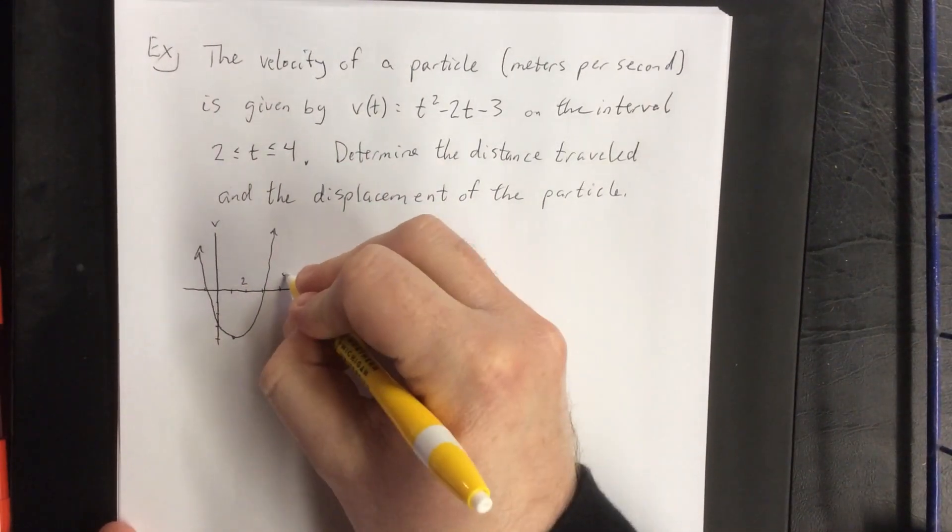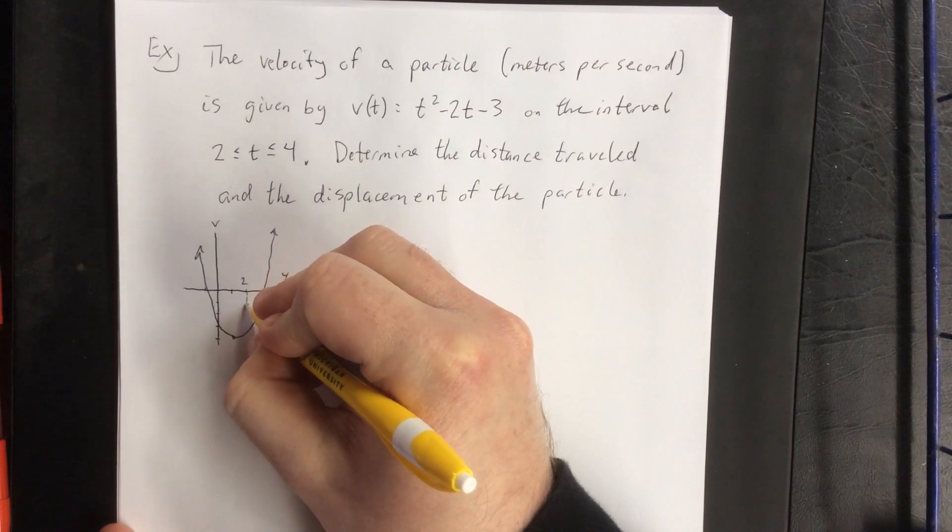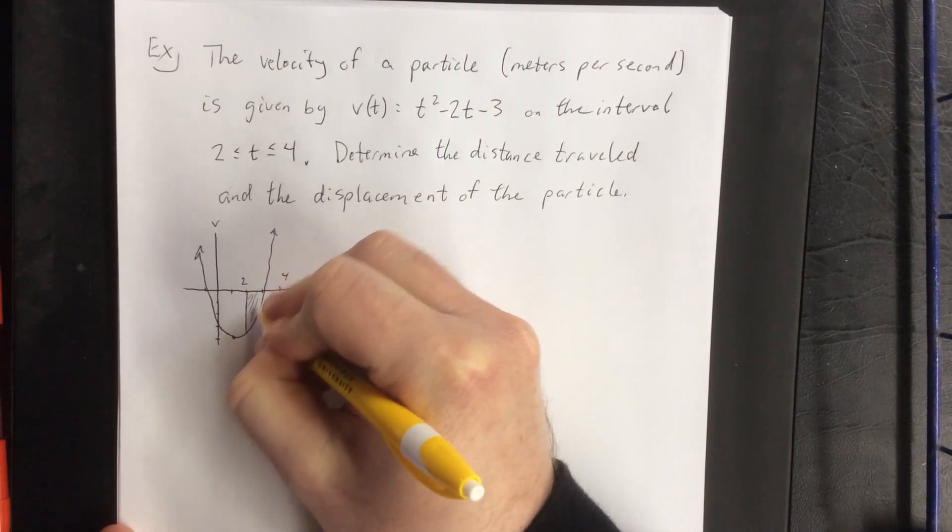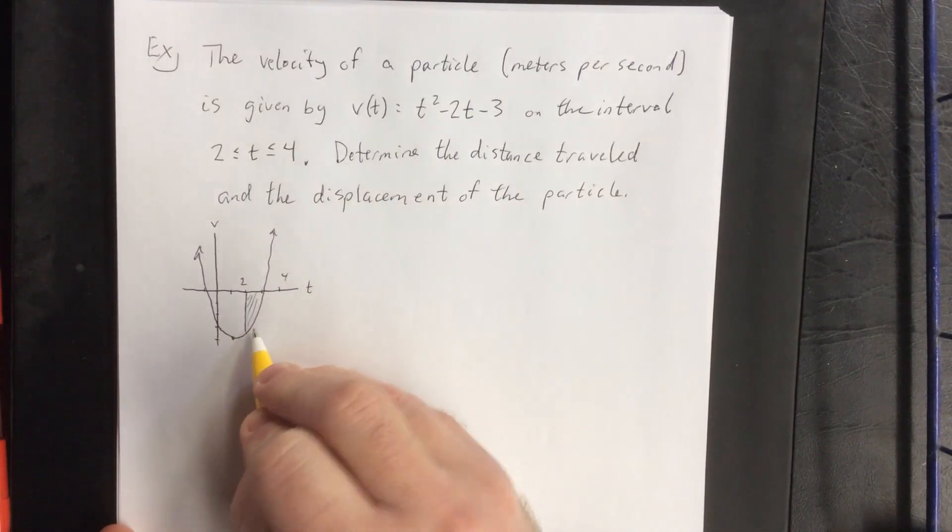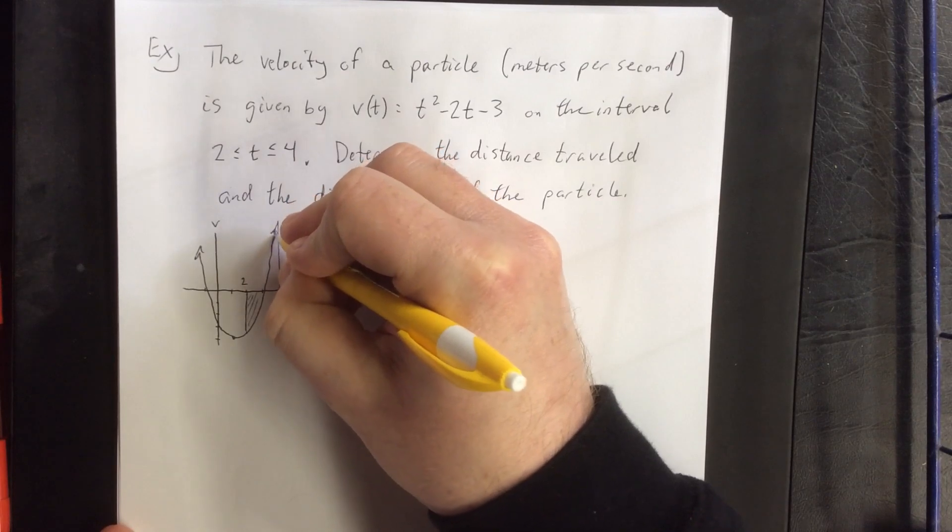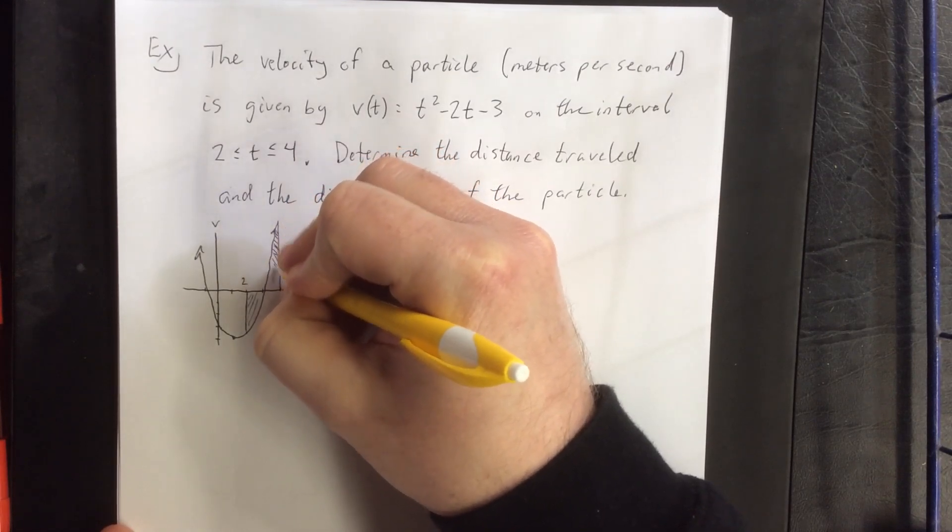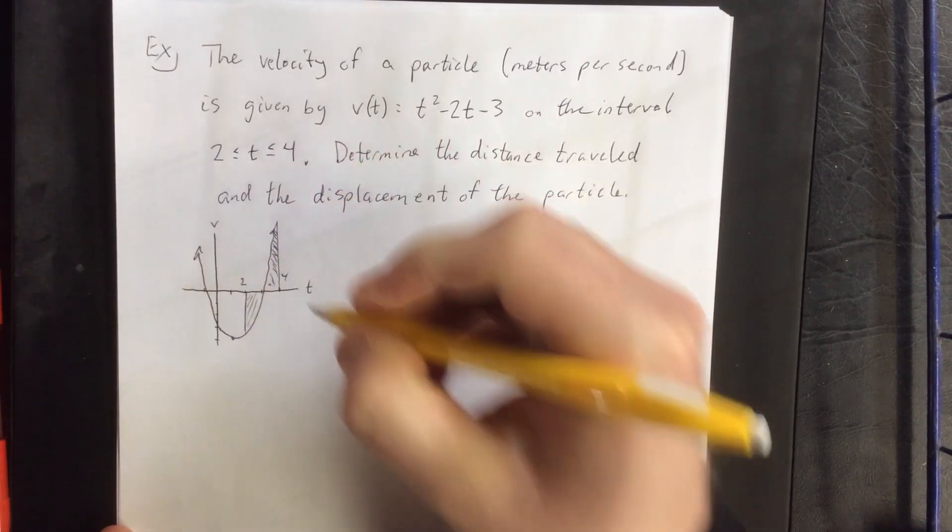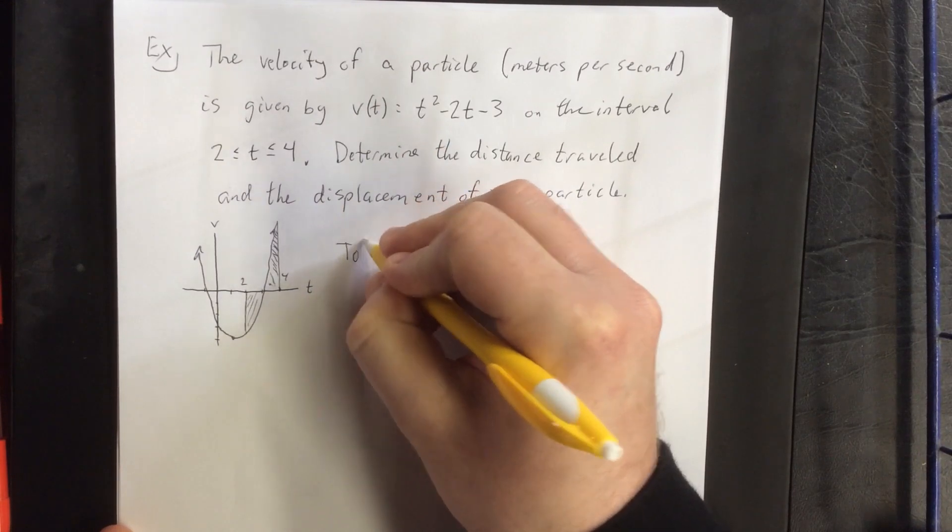Now from 2 to 4 we would have this going on. So I see that during the first second of this interval from 2 to 3, this thing will be moving in a backwards direction because its velocity is negative. During the second second from t = 3 to t = 4, it will be moving in a positive direction.